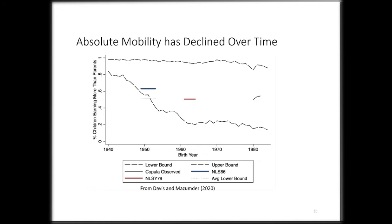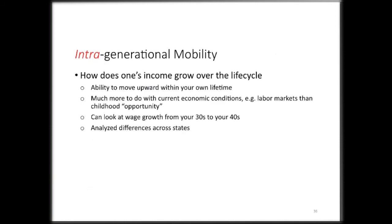As you can see in either of these cohorts, far fewer than 100% exceed their parents' income. That's a sobering message given that with a growing economy and growing absolute income every generation, you might have thought most people would exceed their parents' income.